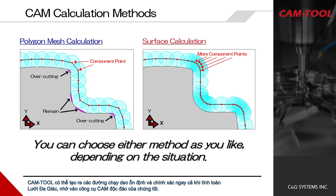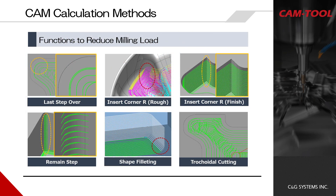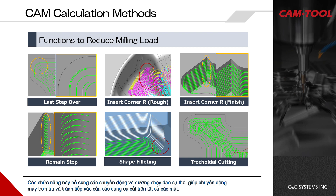CamTool can generate stable and accurate toolpaths even with its polygon mesh calculation, due to its unique CAM engine. In addition, CamTool has many functionalities to support milling load reduction. These functions add specific motions and toolpaths which lead to smooth machine motions and avoidance of contact by cutting tools on all sides.